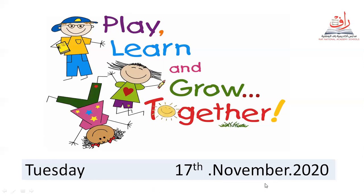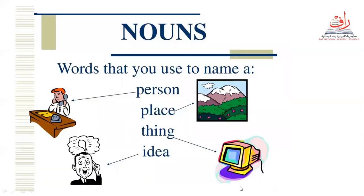Today is Tuesday, 17th of November 2020. Yesterday we were talking about nouns. What is a noun? Words that you use to name. We can use nouns for a person, place, thing, or idea. For example: person — doctor; place — mountain; thing — computer; idea — something that we are thinking about.